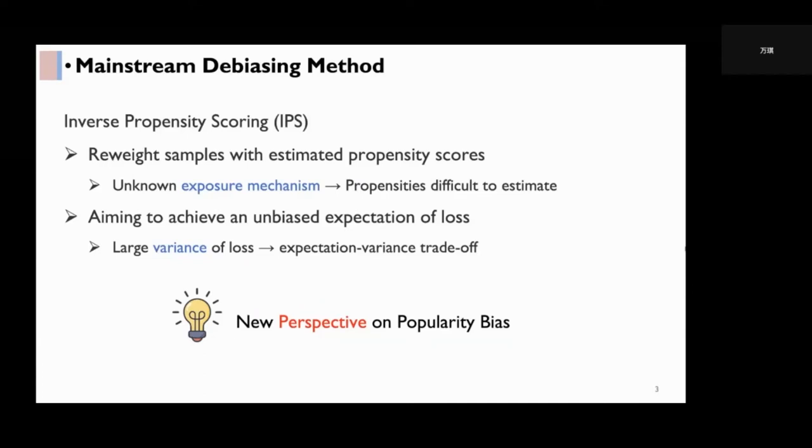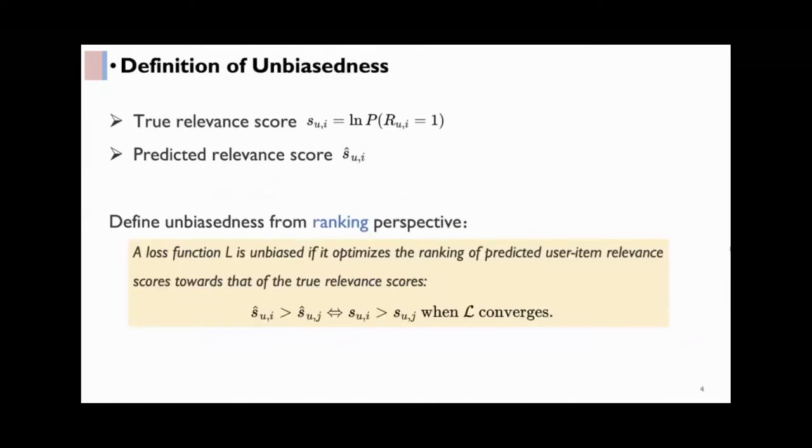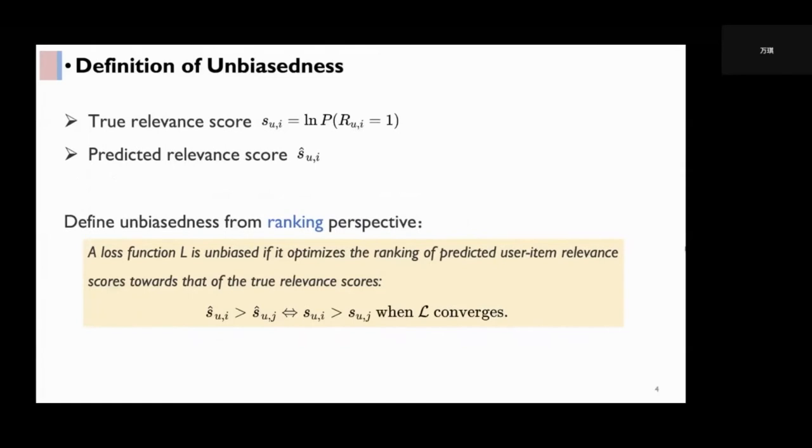In order to avoid these inherent problems of IPS, we take a new perspective on popularity bias. We denote the true relevance score as SUI, which is the natural log of the relevance probability. We denote the predicted relevance score as S hat UI. It is typically obtained by feeding the user and item embeddings into an interaction function like inner product or neural network.